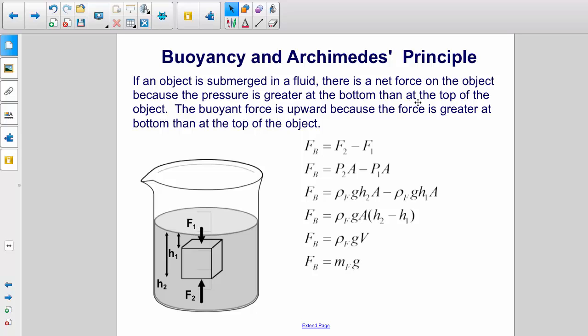Well, buoyant force is the difference between the force at the bottom, F2, and the force at the top, F1. If we use our definition of pressure, which is F over A, we can see that, in essence, it's the difference between the pressure at the bottom and the pressure at the top multiplied by the surface area, top and bottom of the object.